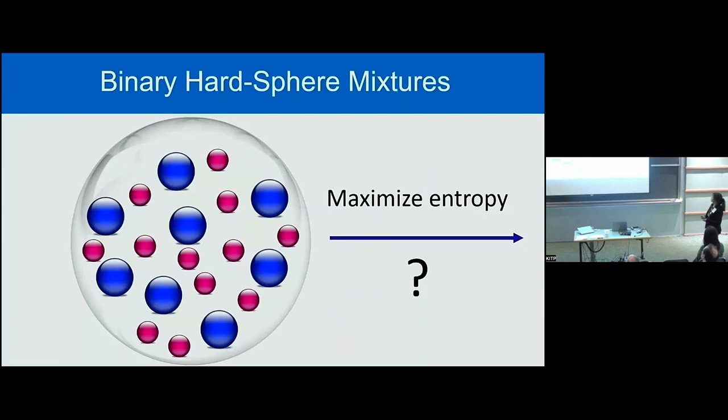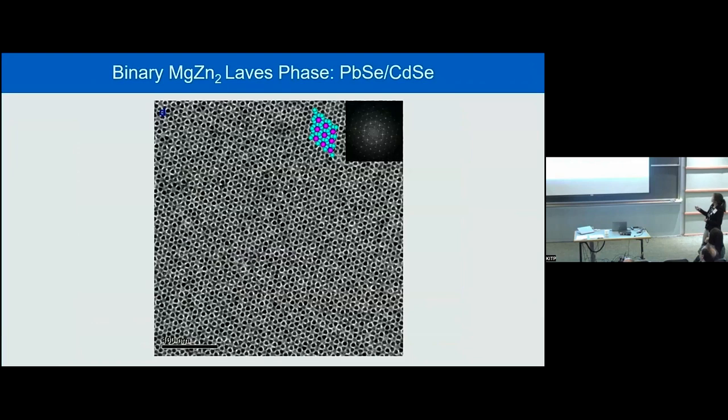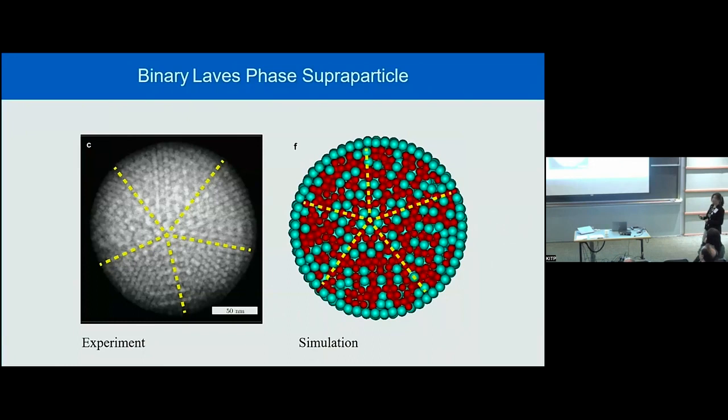Can we also do this for a binary hard sphere mixture? Big spheres and small spheres mixed together in spherical confinement should maximize entropy. Together with experiment — using lead selenide and cadmium selenide particles — in bulk it gives the magnesium zinc Laves phase, because that is the thermodynamically stable structure. But if we put it in spherical confinement, we again see very beautiful five-fold symmetries at the outside of the supraparticles.